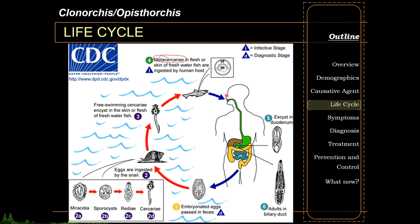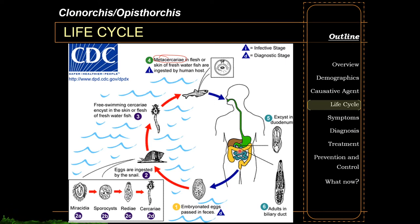Once the metacercaria gets ingested, it would excyst in the duodenum. Similar to Fasciola, the larva will try to look for a path from the duodenum into the liver. In contrast to Fasciola though, it doesn't penetrate through the intestinal mucosa. Instead, it looks for an easier route — through the ampulla of Vater towards the biliary ducts — where it can eventually reach the inside of the biliary ducts within the liver. This is very important in the symptomatology and pathogenesis of Clonorchis and Opisthorchis.